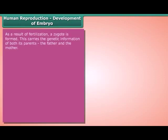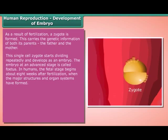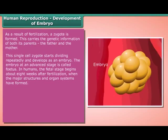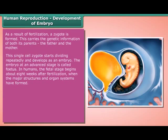Development of embryo. As a result of fertilization, a zygote is formed. This carries the genetic information of both its parents — the father and the mother. This single-cell zygote starts dividing repeatedly and develops as an embryo. The embryo at an advanced stage is called a fetus. In humans, the fetal stage begins about eight weeks after fertilization, when the major structures and organ systems have formed.